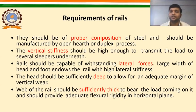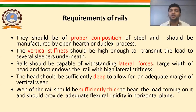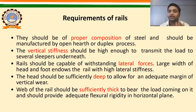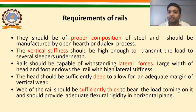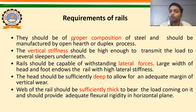Now the next important topic is about the requirements of an ideal rail. We will look at the different requirements one by one. The first requirement is composition: they should be of proper composition of steel and should be manufactured by open hearth or duplex process.